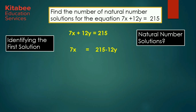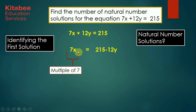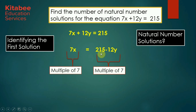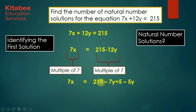We write the equation as 7x equal to 215 minus 12y. The LHS is a multiple of 7, so the RHS must also be a multiple of 7. We break 215 minus 12y as 210 minus 7y plus 5 minus 5y. Since 210 is a multiple of 7 and 7y is also a multiple of 7, we need to make 5 minus 5y a multiple of 7.